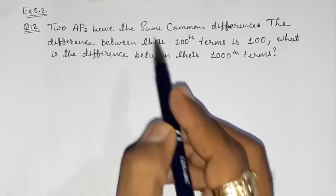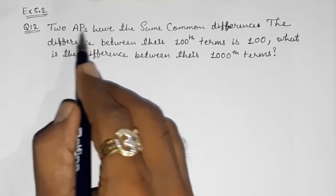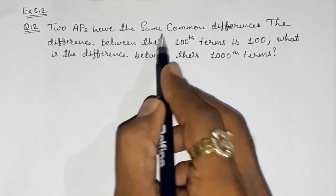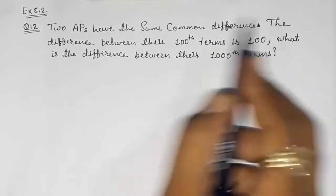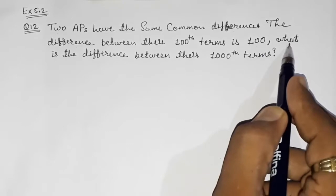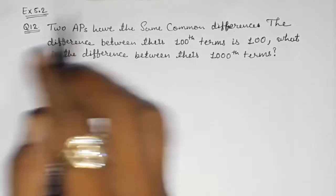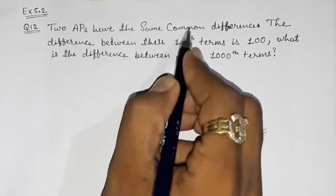So let us start. Two APs have the same common difference. The difference between their 100th terms is 100. What is the difference between their 1000th terms?